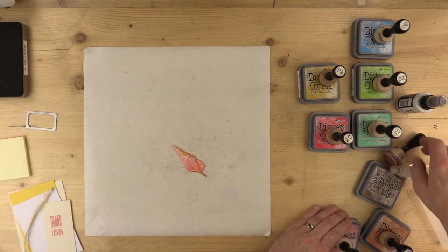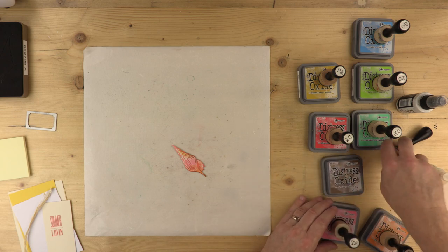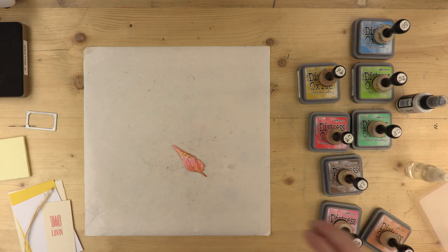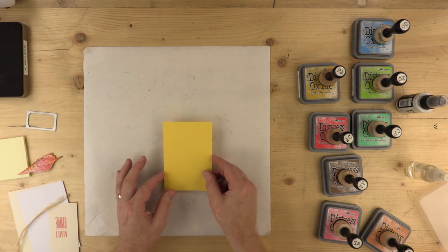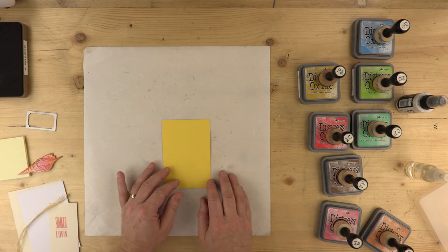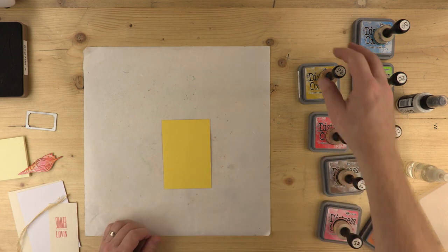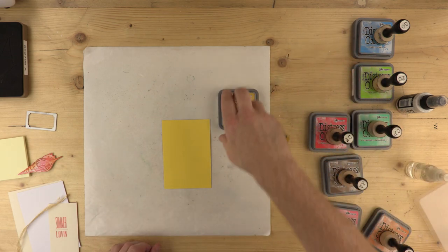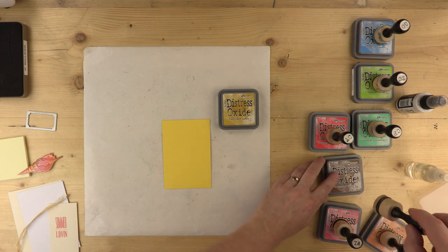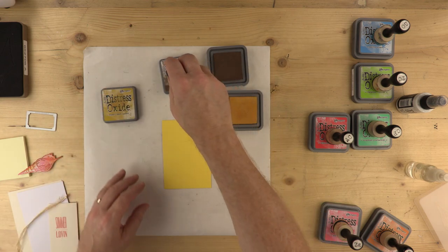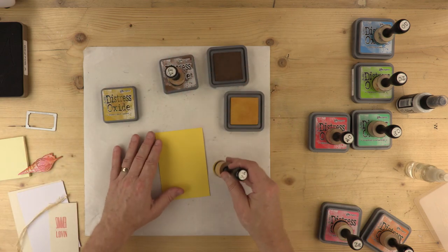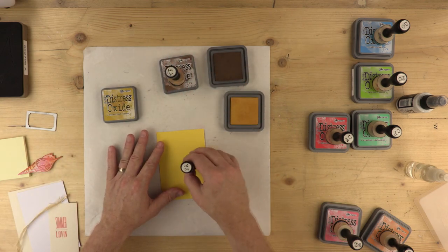I'm starting off, this is going to be my sand. And I'm starting off, it's quite a primary yellow. But the way we're going to knock that colour back is by using a few distressed oxides. We're going to use Vintage Photo again. And we're going to use fossilised amber.